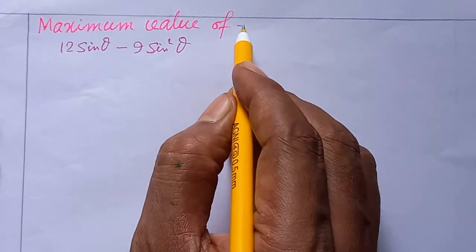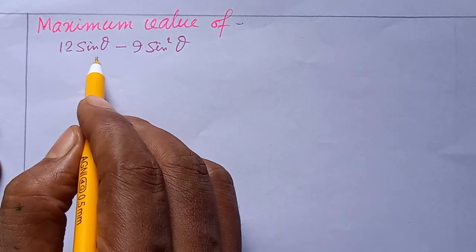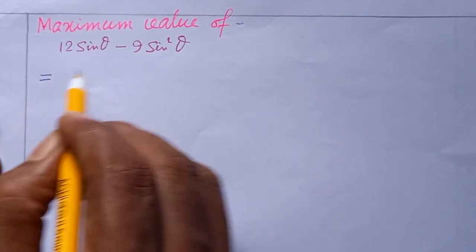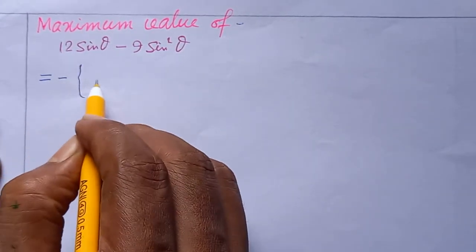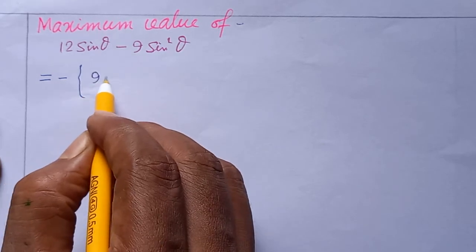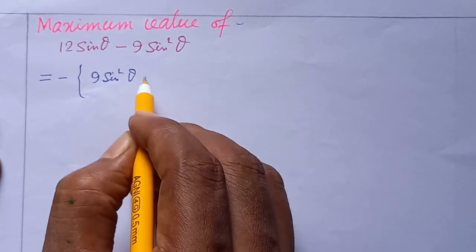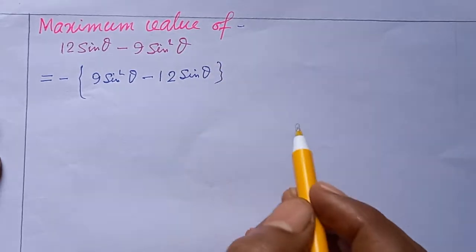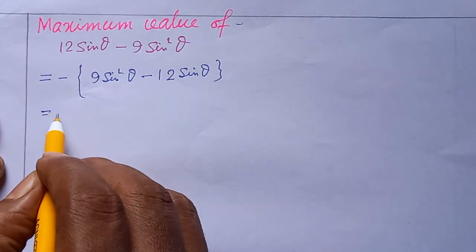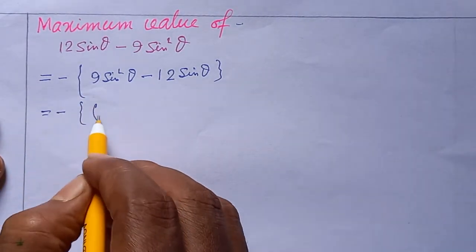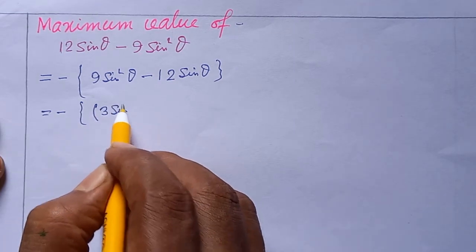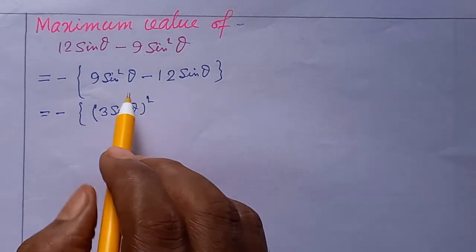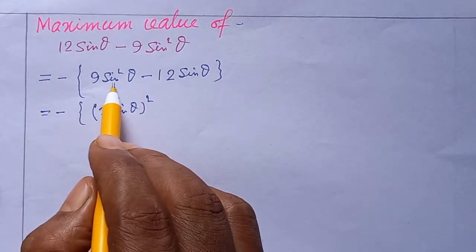Find the maximum value of 12sinθ - 9sin²θ. We rewrite the expression, noting the terms 9sin²θ and 3sinθ, to prepare for completing the square.